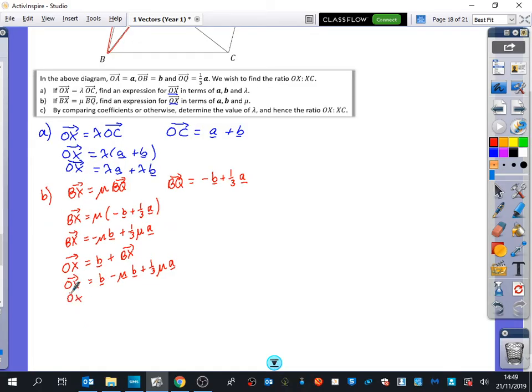If I simplify this and factorise, let's take the A bit to begin with. I have a third mu A plus when I factorise this B part, I get one minus mu.